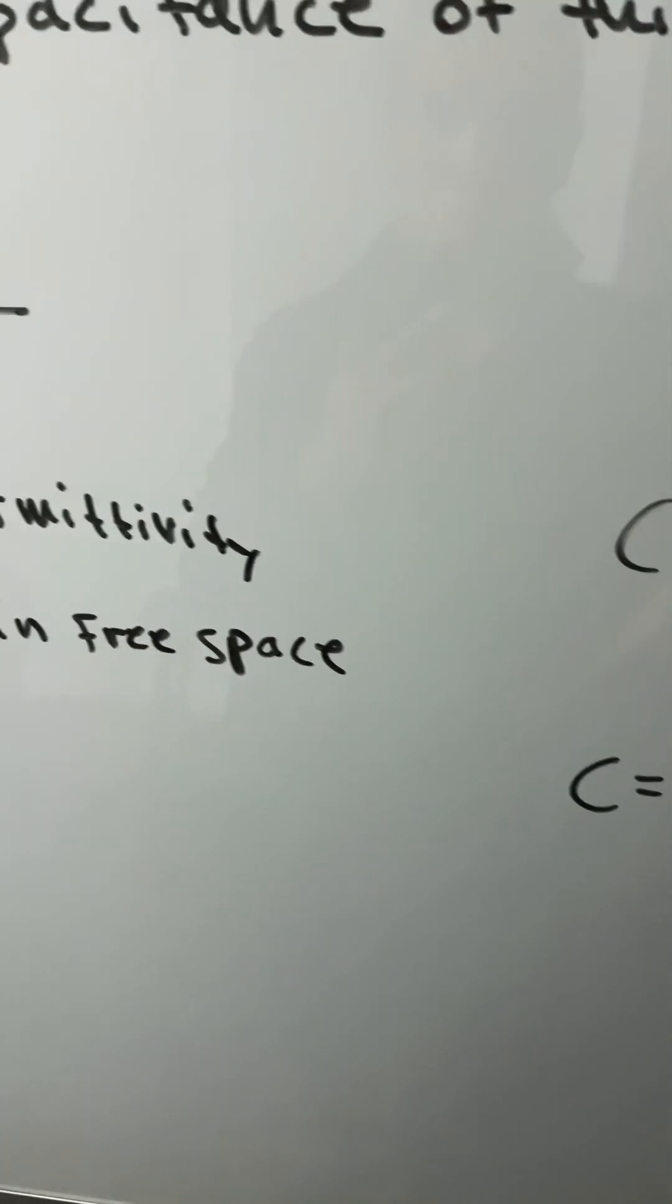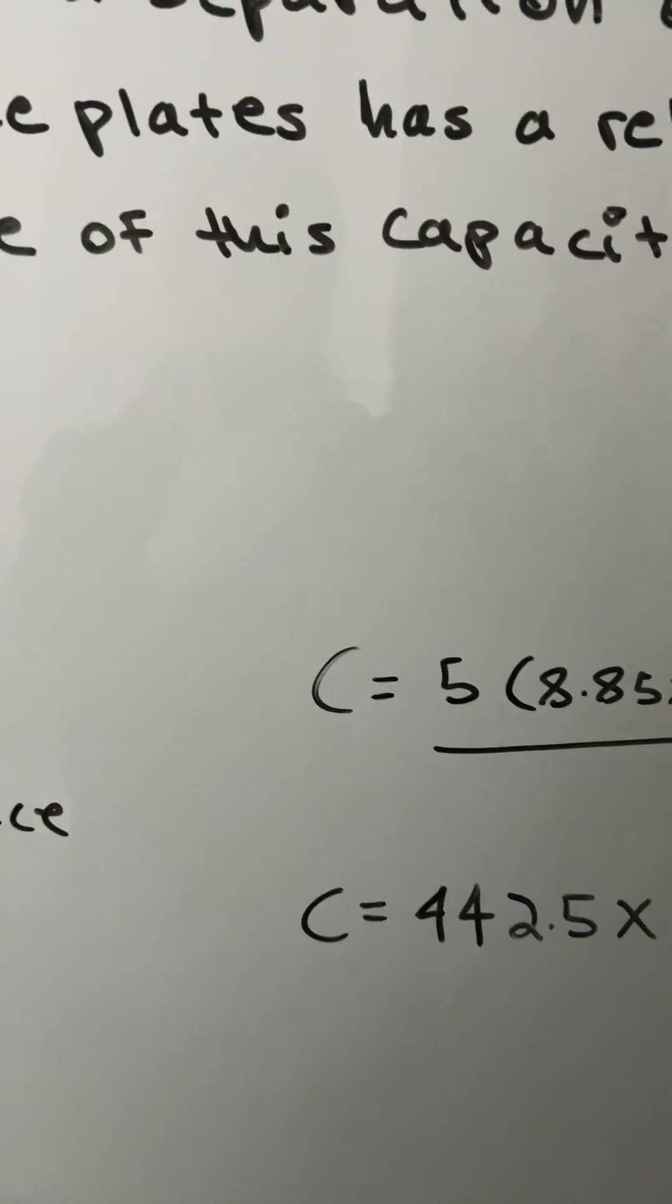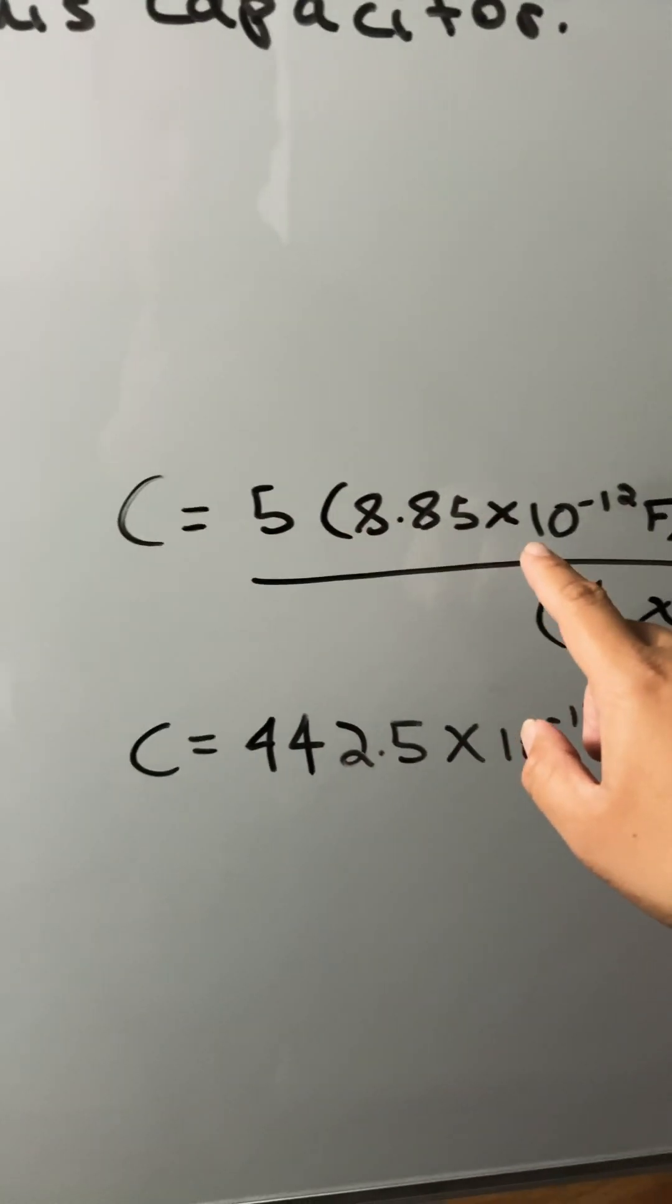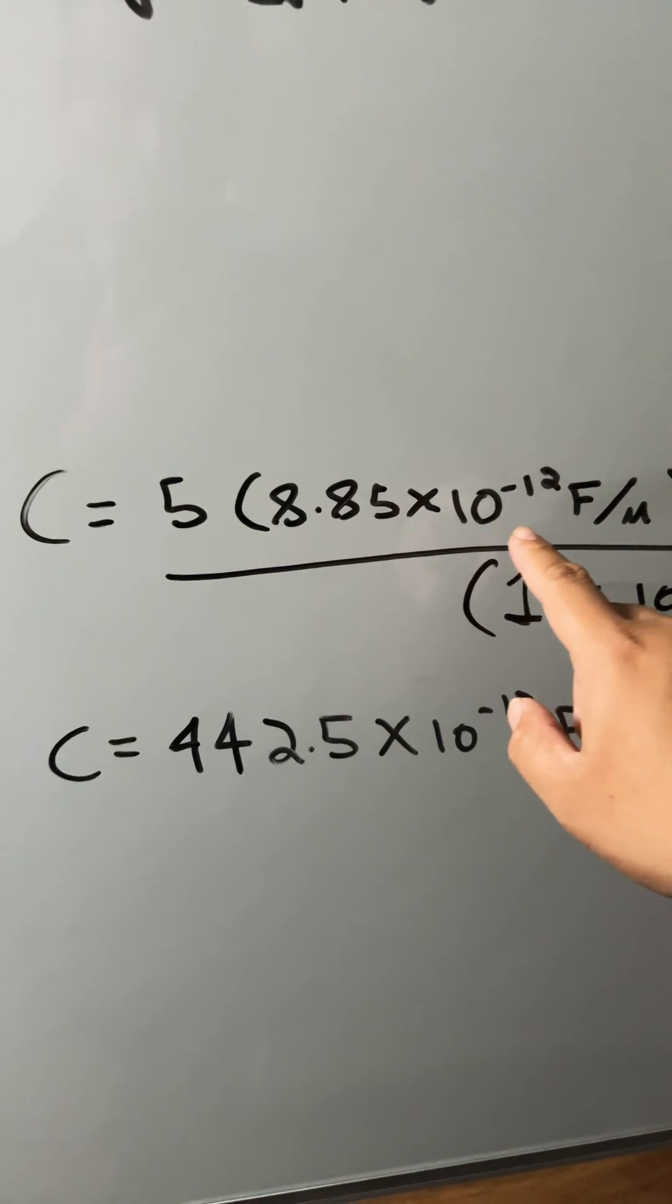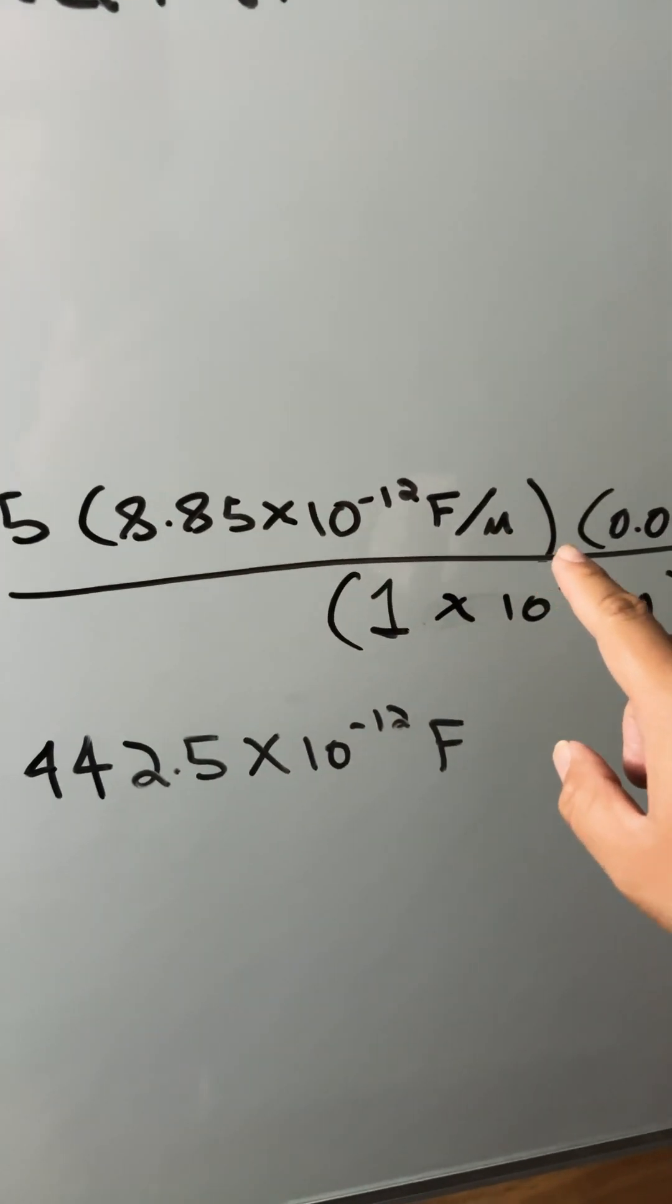So we plug in the numbers that were given in the problem, which is five for relative permittivity. This is the 8.85 times 10 to the negative 12, which is permittivity in free space,